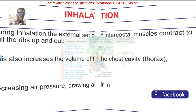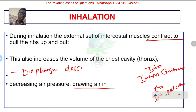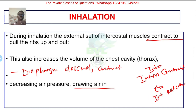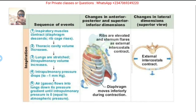The diaphragm descends — it contracts and becomes flattened. All of this causes the whole chest to become bigger. The sternum moves upward and outward. Here is the sequence of events when someone inhales — it's a bit more advanced so you may pause the video to read through this.